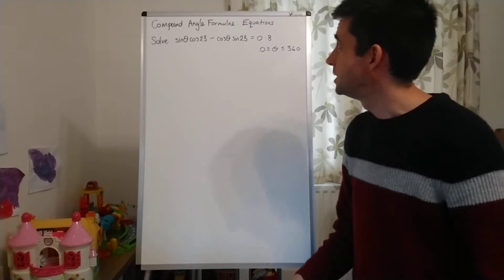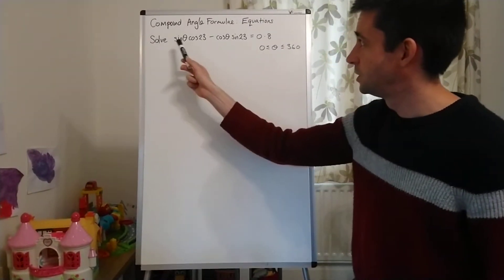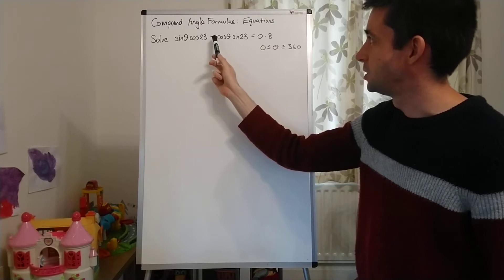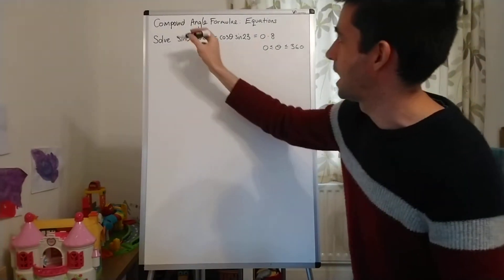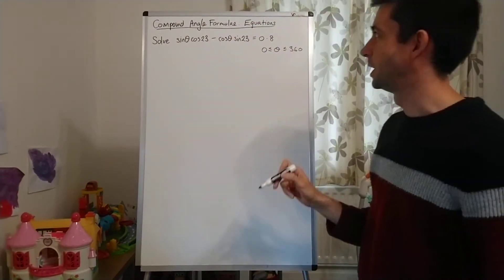So what I have here is I'm being asked to solve sin theta cos 23 minus cos theta sin 23 equals 0.8. Let's just make that look separate from the title, there we go.